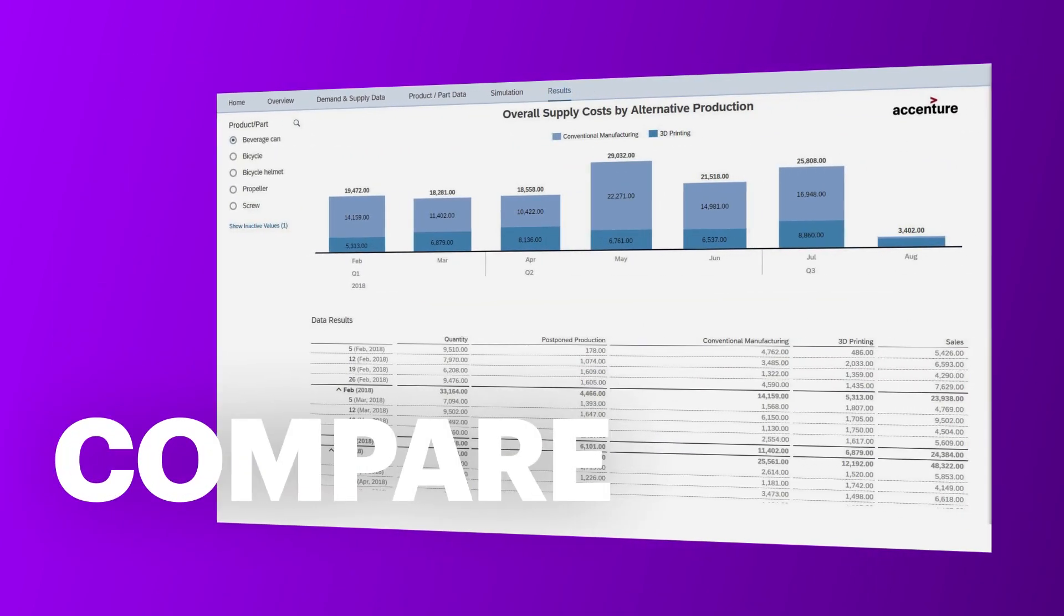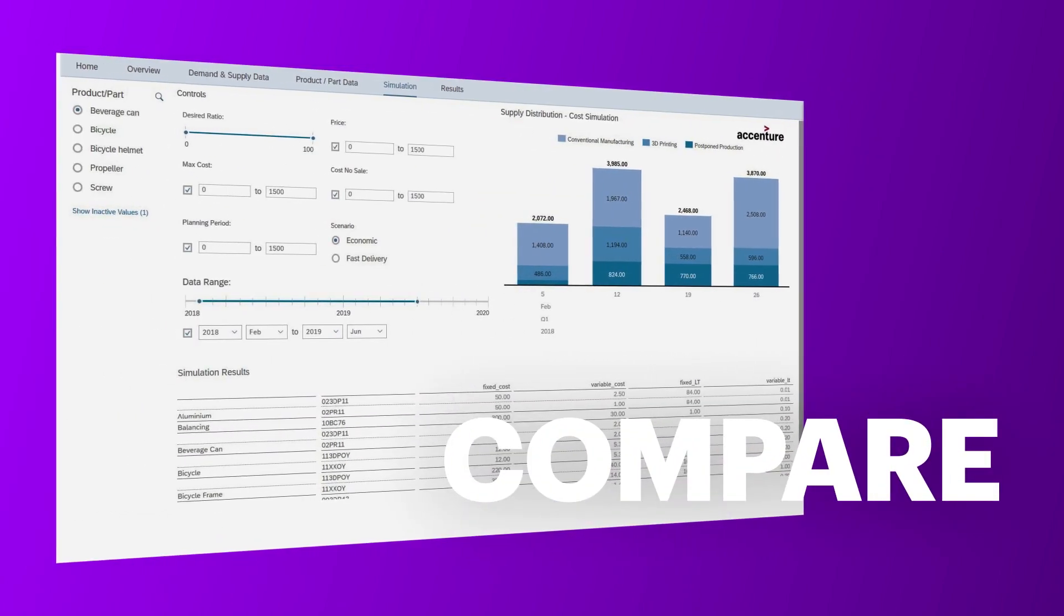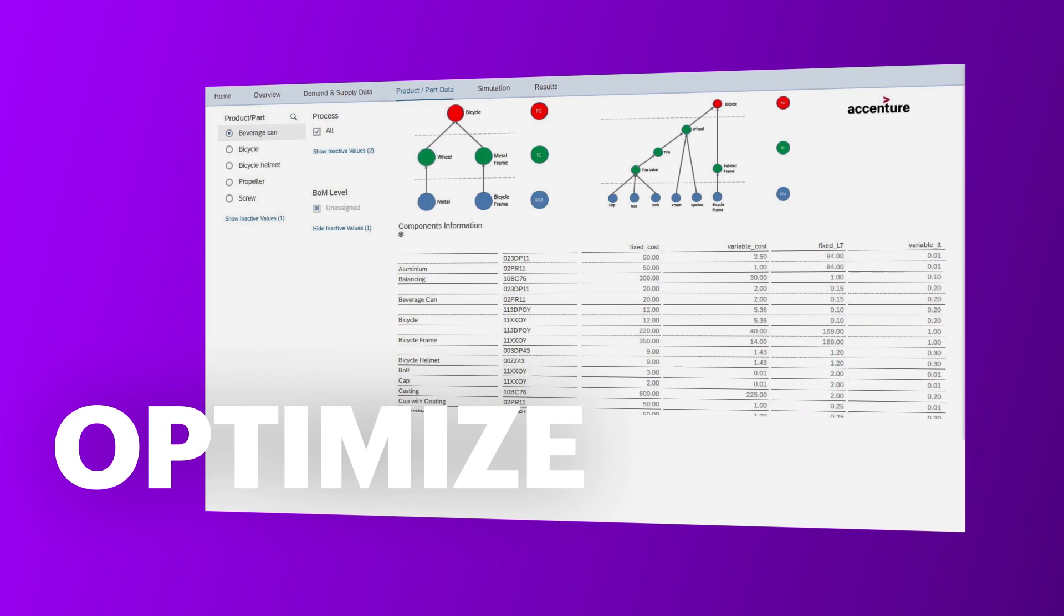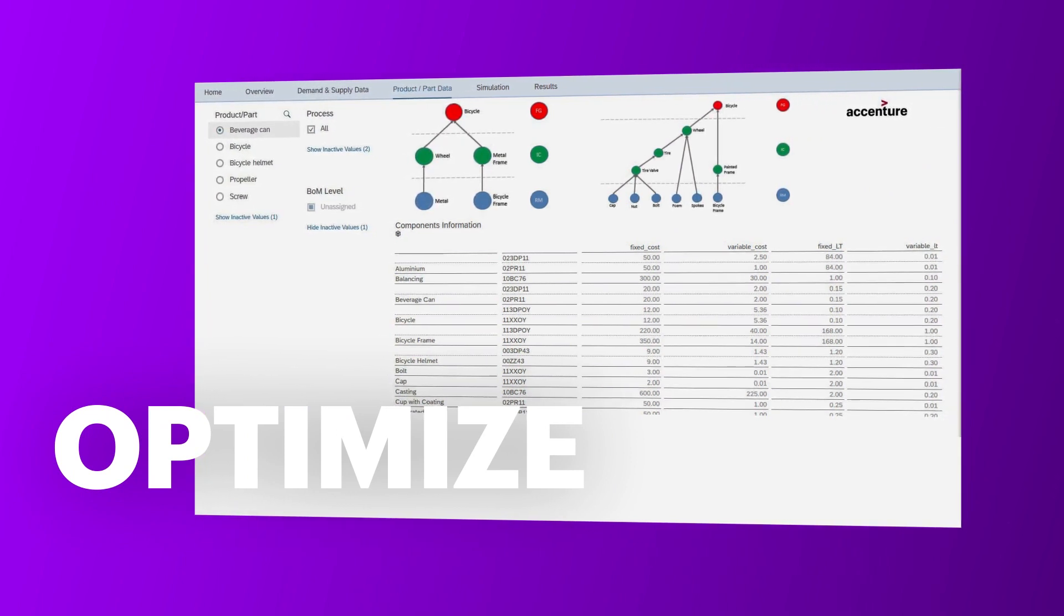KPIs allow for easy comparison and identification of most suitable products for a 3D printing approach. In-depth root cause analysis and simulation scenarios with adjustable parameters help you optimize operations.